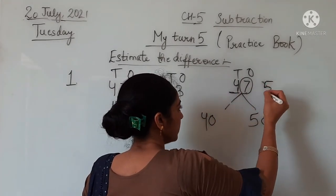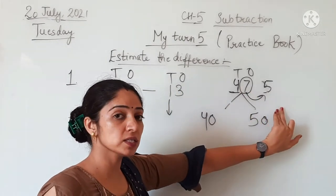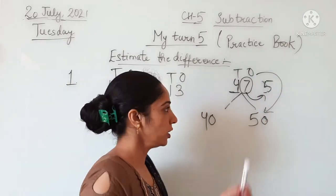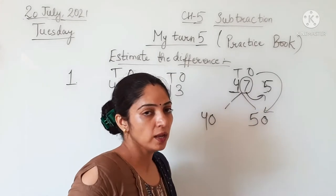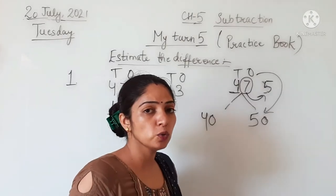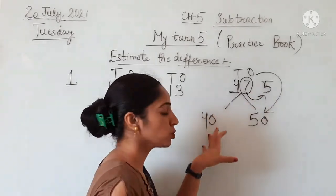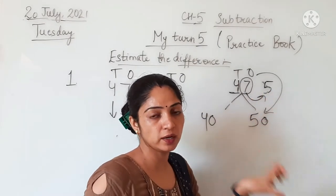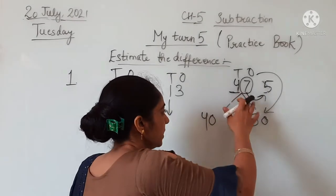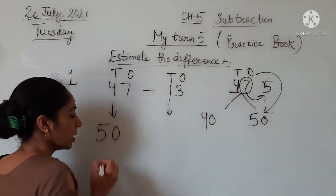On comparing this digit with 5, we can see that 7 is greater than 5. So this number will be rounded to the biggest number. Why? Because this ones place digit is greater than 5. You know the rule: when this digit is less than 5, then move to the smaller side. And when the ones place digit is greater than or equal to 5, then this number will be moved to the biggest side. So 47 will be rounded to 50.